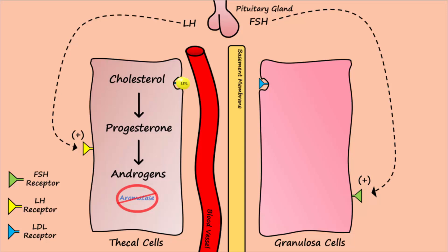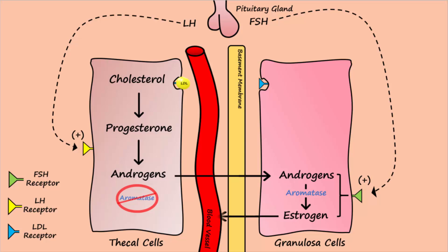The androgens must diffuse to the granulosa cells, where aromatase is present. The aromatase converts the androgens into estrogen inside the granulosa cells. Newly formed estrogen will then diffuse into the blood.